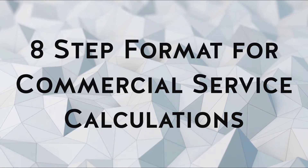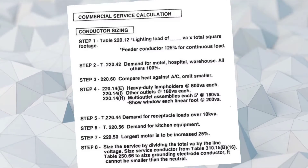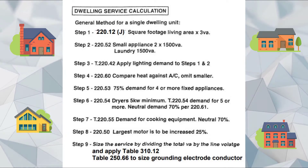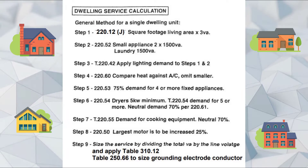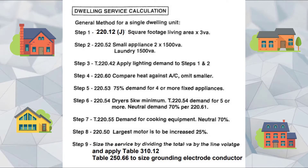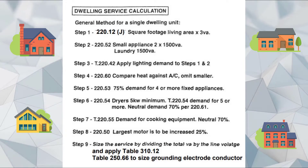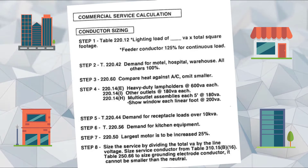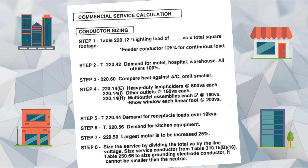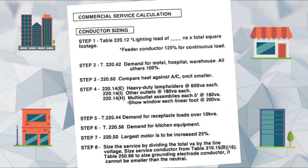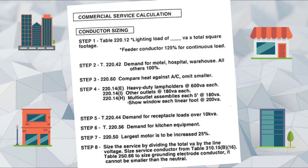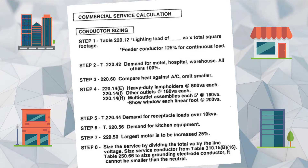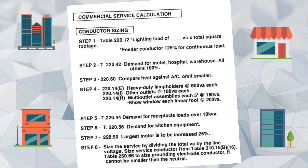The 8-step format for commercial service calculations is different from dwelling service calculations. In a dwelling unit, you get to derate to a high rate because you're not going to have all the lights on or use all the load at any given time. In a commercial application, you're going to be using continuous loads a lot — think about a retail sales area where lights are on 24 hours a day, air conditioning is running constantly, and refrigeration and freezing equipment runs constantly. So the loads are heavier and more constantly used.